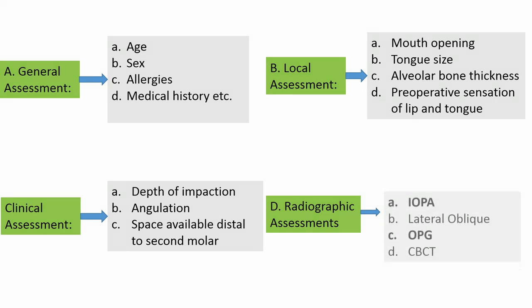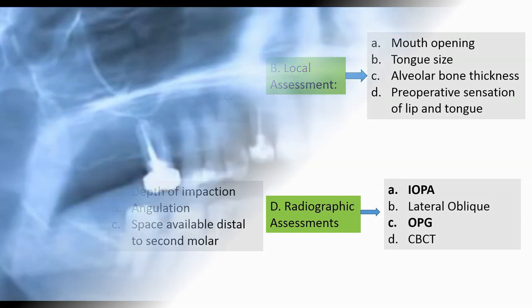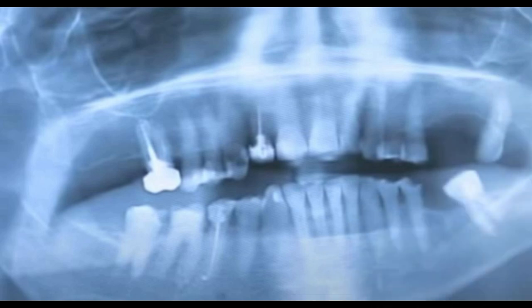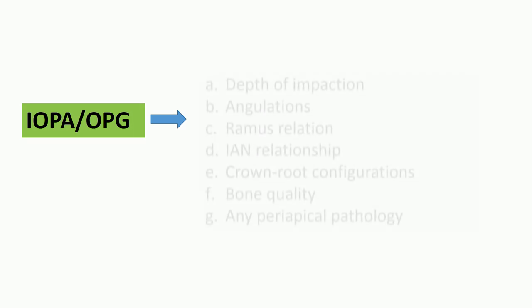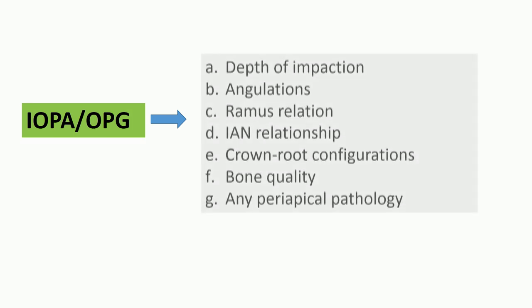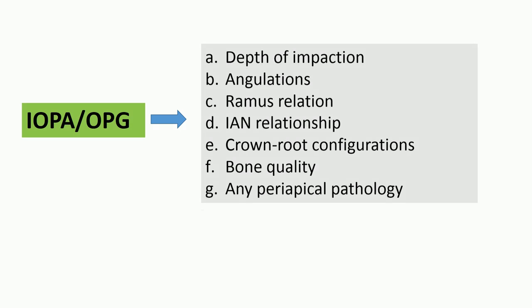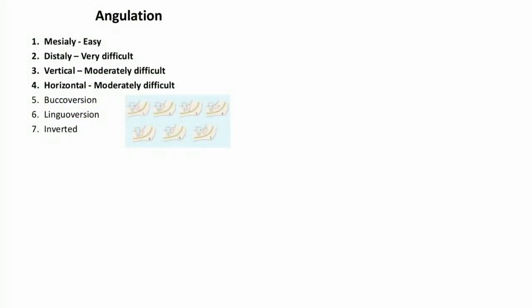Clinical assessments of third molars — including depth of impaction, angulation, and space available distal to the second molar — are evaluated. Radiographic assessments such as IOPA, lateral oblique, OPG, and CBCT are used, of which IOPA and OPG are the gold standard. They assess depth of impaction, angulations, ramus relation, Winter's lines, and the inferior alveolar nerve.